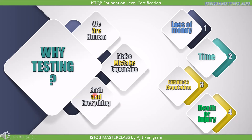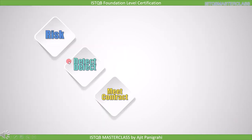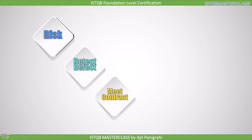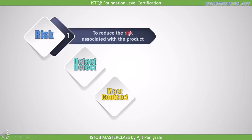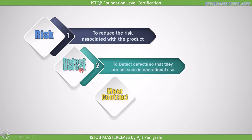So in order to avoid these losses and to minimize risk, we have to test every single aspect of our product. Now let's look into three important points for a better understanding of why testing is necessary. The first point is related to risk — we perform testing to reduce the risk associated with the product. We do that by detecting defects, which is our next point: we have to detect defects so that they are not seen in operational use.